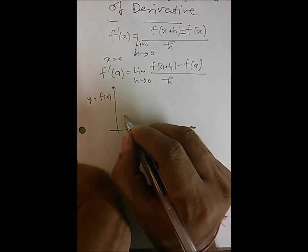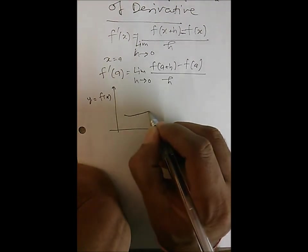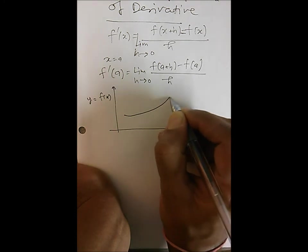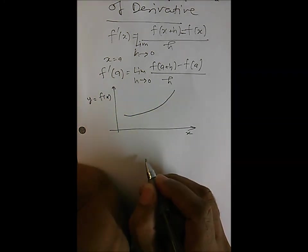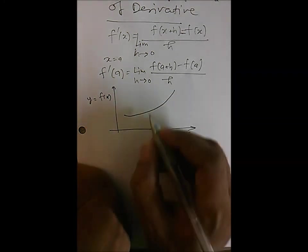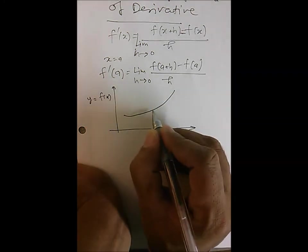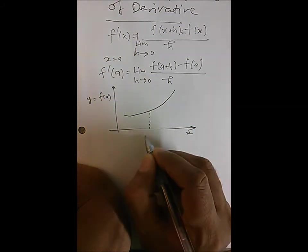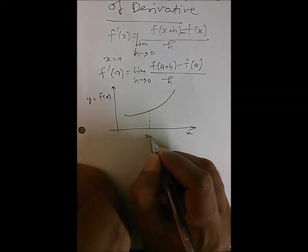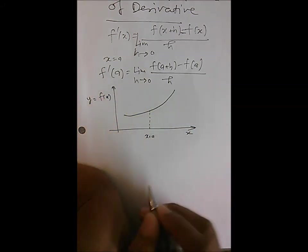This is how a typical curve looks, and we are interested in finding the derivative at a particular point x equal to a.